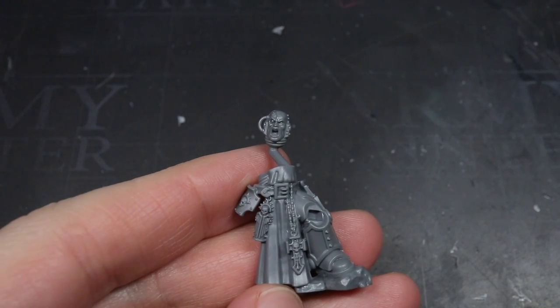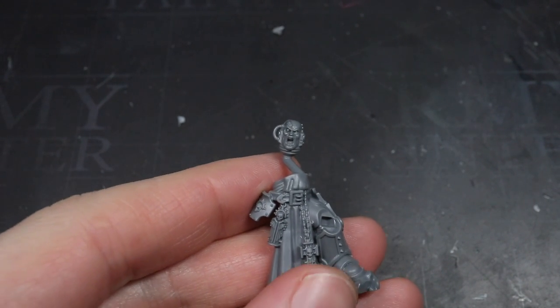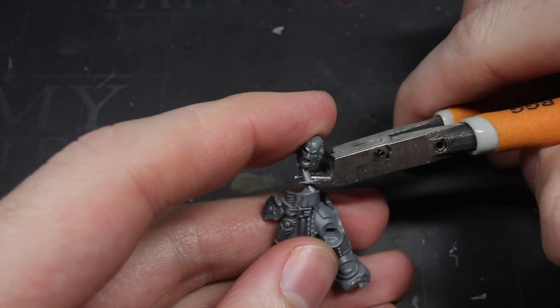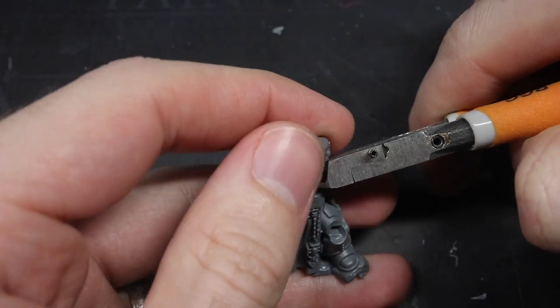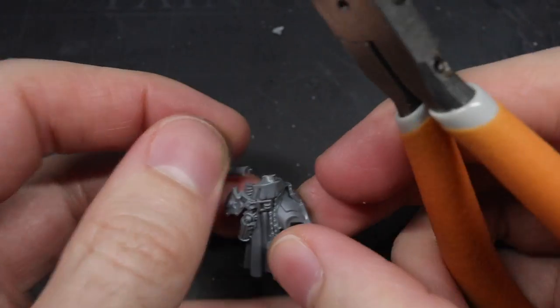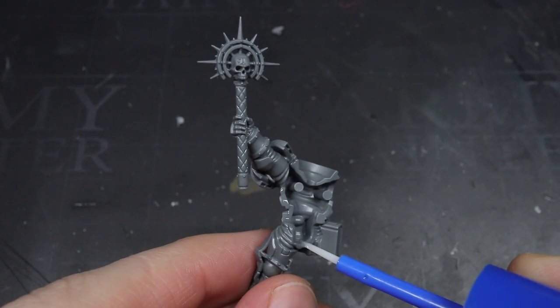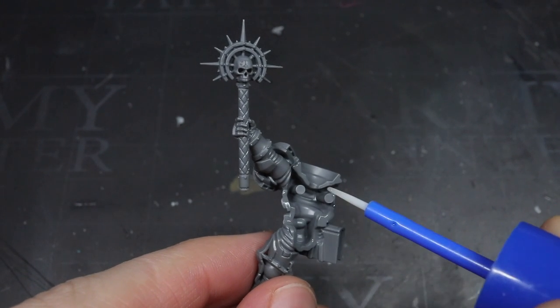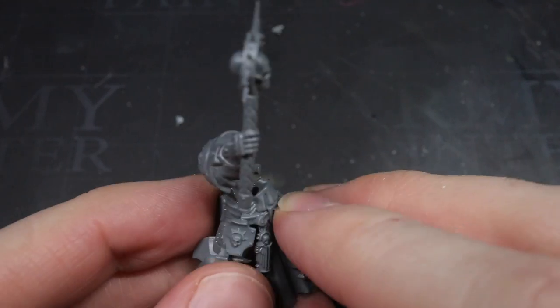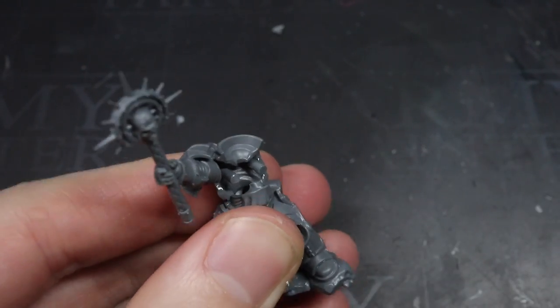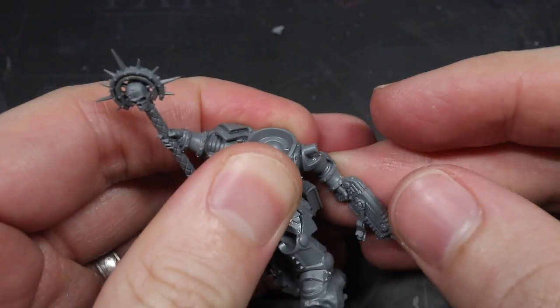With the modification to the weapon completed, I could start to think about assembling the rest of the model. This particular miniature has a rather strange structure, with the head being attached to the lower legs and the two torso halves being separate. However, as I wasn't planning on using the stock head, I used my clippers to cut away this pole just above the waist before continuing to assemble the legs, torso and arms together.